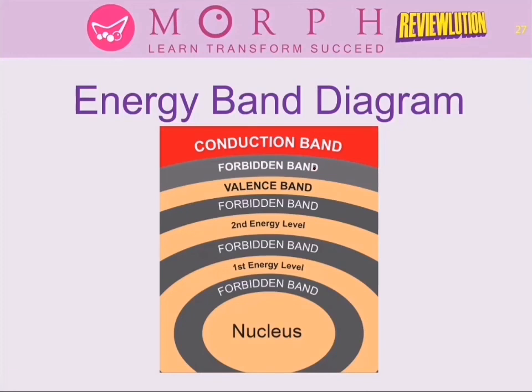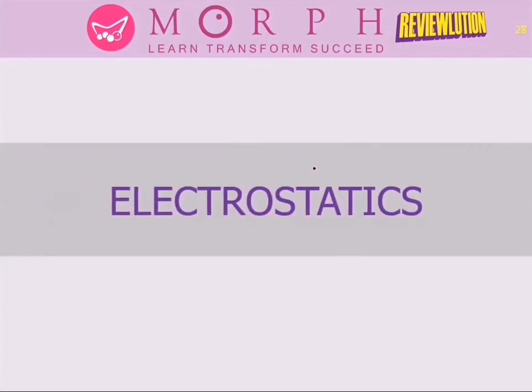For conductors, the energy gap is zero — valence and conduction bands overlap, so electrons can easily become free. For insulators, the energy gap is greater than 5 eV, making it very hard to free electrons. For semiconductors, the energy gap is approximately 1 eV — germanium is 0.67 eV and silicon is 1.1 eV. There is also a forbidden band — a region where no electrons can exist — found between any two allowed energy bands. Now let's move on to electrostatics.